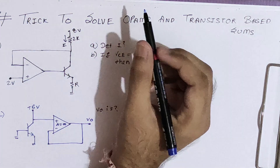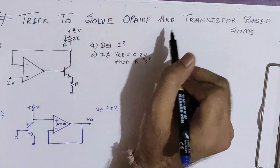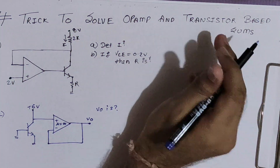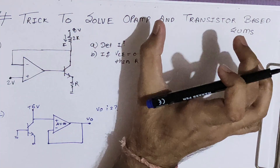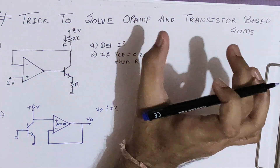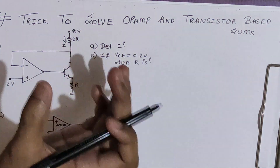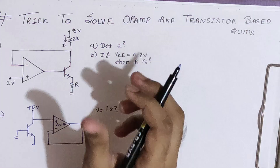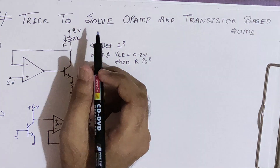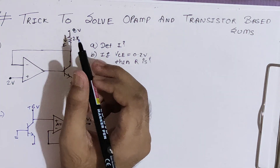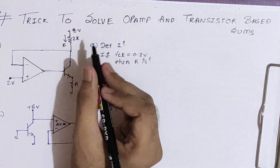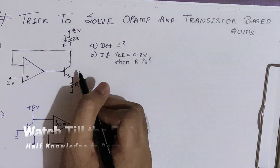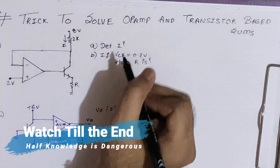Hello friends, today we are going to see the trick to solve op-amp and transistor-based problems. This is a very important topic in analog electronics. So let's start with the first sum directly, and there only we will see the trick. The first problem involves the given op-amp and transistor circuit.